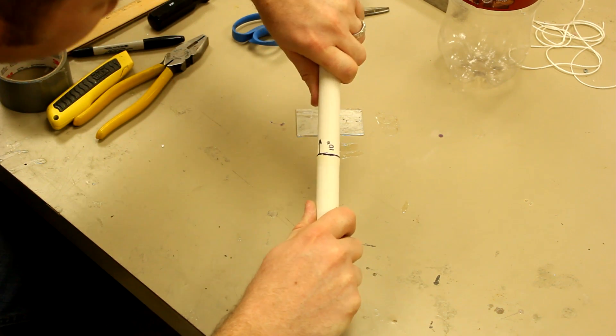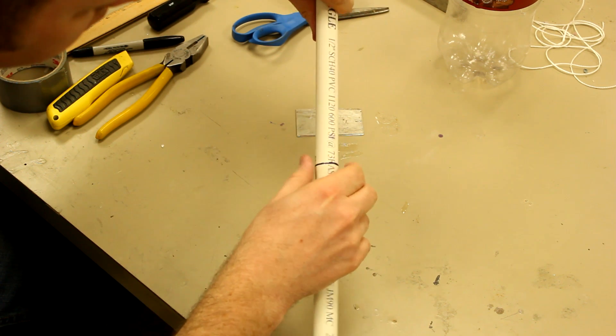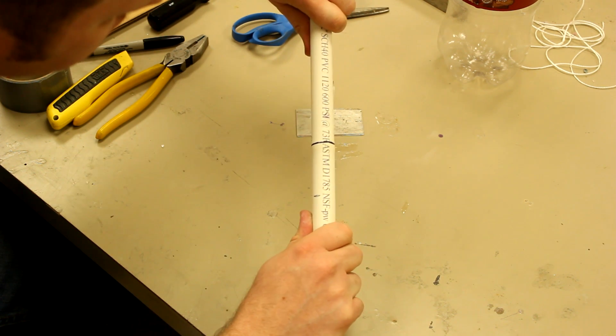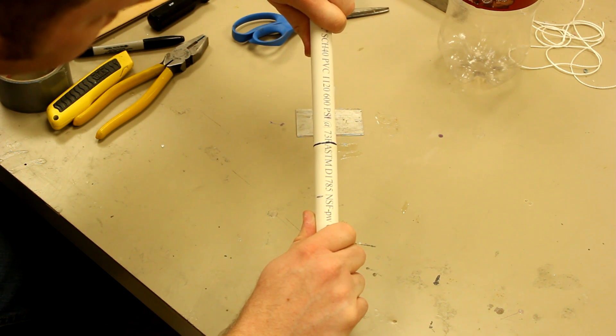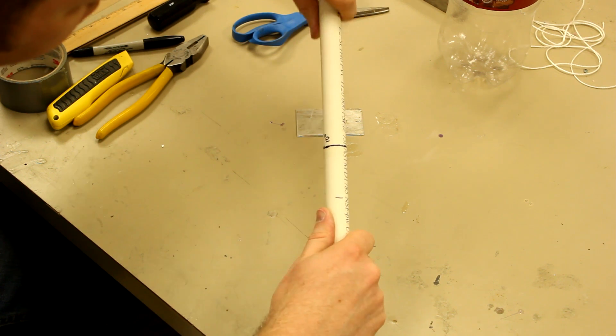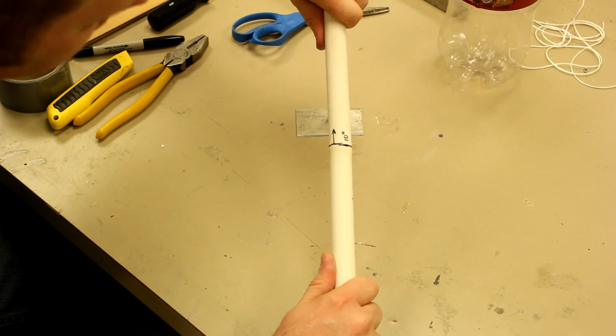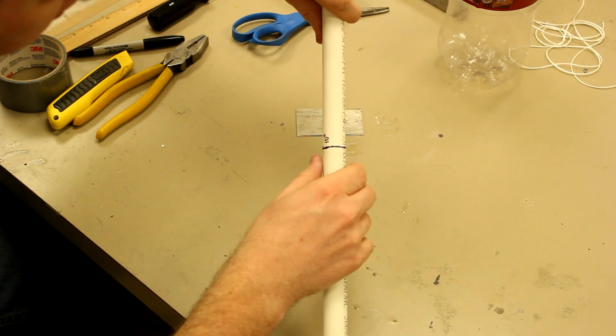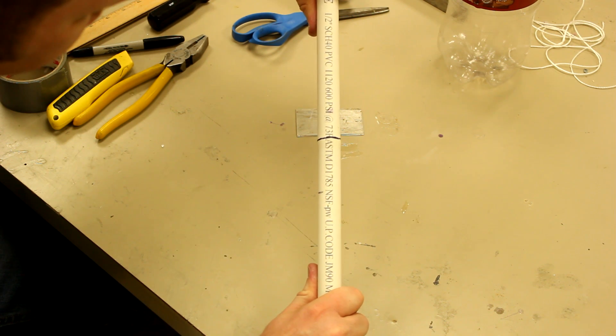You need to hold that and try to keep the PVC as straight as possible. And as that cools, that bulge will become permanent. And you only need it to be ever so slight because the diameter of the PVC is already nearly perfect to seal against the bottle.